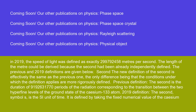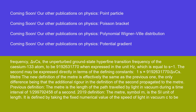The new definition of the second is effectively the same as the previous one, the only difference being that the conditions under which the definition applies are more rigorously defined. Previous definition: The second is the duration of 9,192,631,770 periods of the radiation corresponding to the transition between the two hyperfine levels of the ground state of the cesium-133 atom. 2019 definition: The second, symbol s, is the SI unit of time. It is defined by taking the fixed numerical value of the cesium frequency Δν_Cs, the unperturbed ground state hyperfine transition frequency of the cesium-133 atom, to be 9,192,631,770 when expressed in the unit hertz (Hz = s⁻¹). The second may be expressed directly in terms of the defining constants: 1 s = 9,192,631,770 / Δν_Cs.